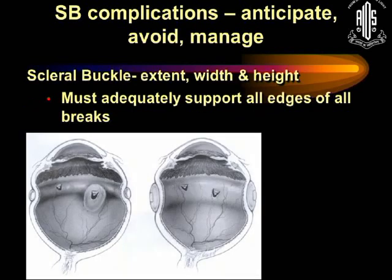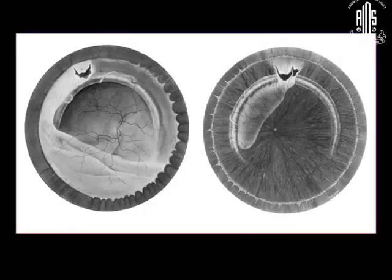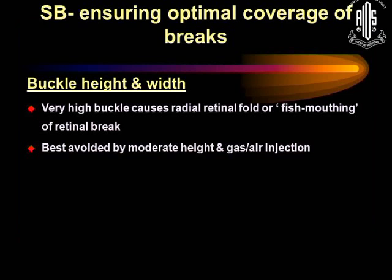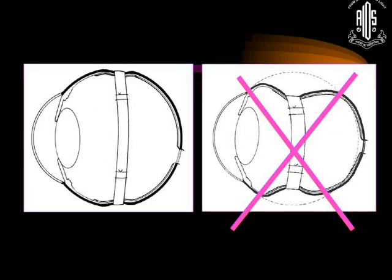After tightening the buckle, assess that all breaks are adequately covered — the anterior, posterior, and lateral margins. The anterior margin is more prone to error; if it's not covered, you may have trickling of fluid and an inferior detachment. A very high buckle causes radial folds or fish-mouthing and is best avoided by using a moderate buckle height with gas or air injection. Don't tie the band too tight, as this causes late complications like intrusion, anterior segment ischemia, cutting through, and the clothesline phenomenon seen with supramid sutures.